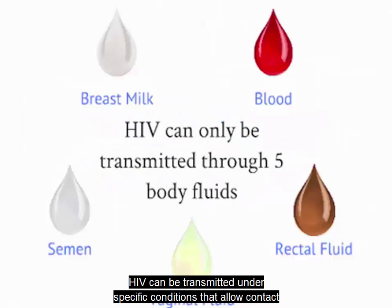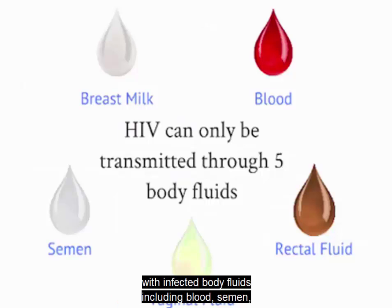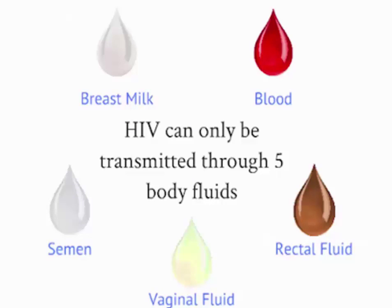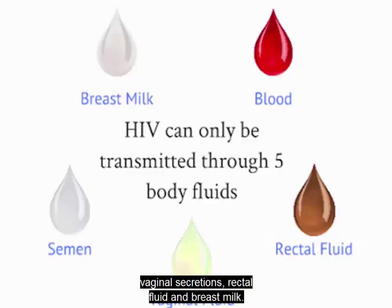HIV can be transmitted under specific conditions that allow contact with infected body fluids, including blood, semen, vaginal secretions, rectal fluid, and breast milk.